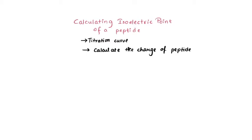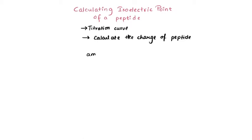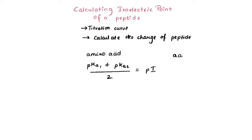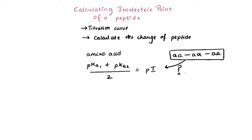Calculating the isoelectric point for a single amino acid is quite simple: you get pKa1, you get pKa2, you add them up, take the average, and you get the pI. But what if you have more than one amino acid bound together by a peptide bond? How would you calculate the pI of the overall peptide? We're going to look at an example and work through that problem.